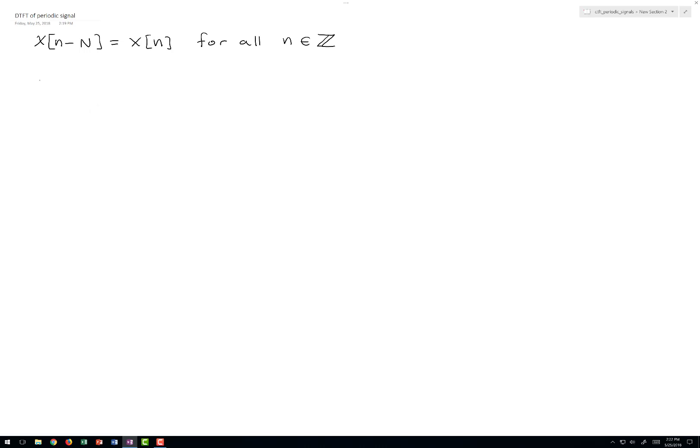It turns out that computing the Fourier transform of a periodic sequence is quite easy. We'll start by expanding the signal in its Fourier series representation, which looks like this, where the coefficients in the series can be calculated using this formula.